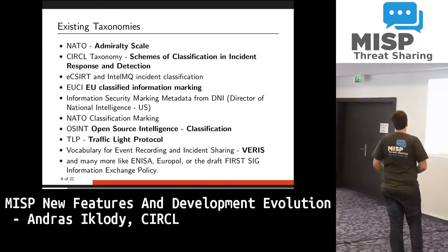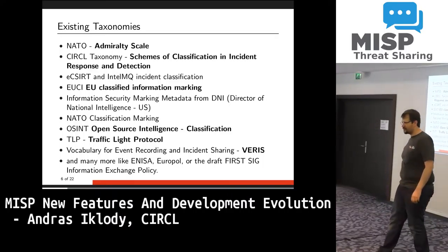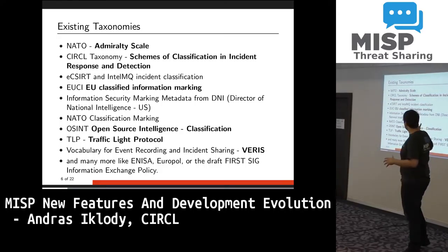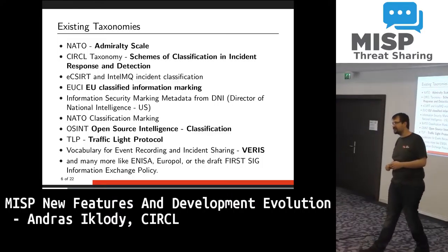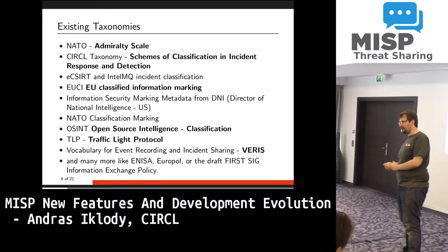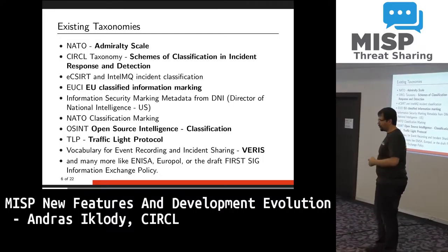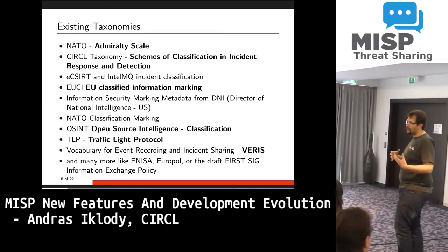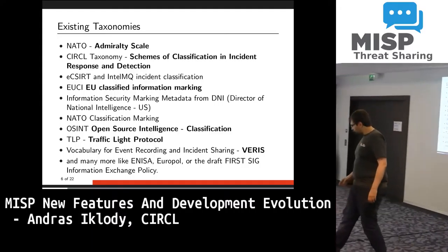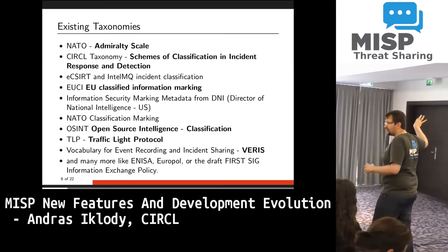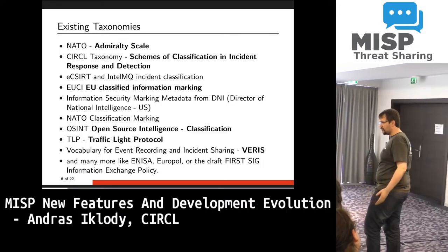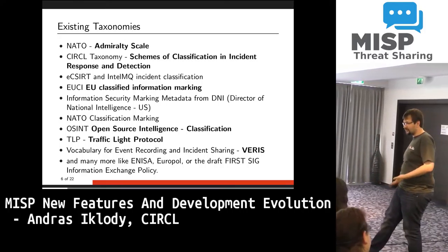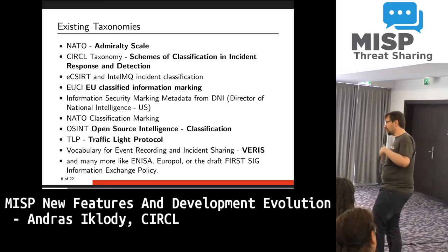Here's a list of some of the taxonomies we have — not nearly comprehensive, we have something like 40 taxonomies at the moment. They deal with very different issues: for example, the Admiralty Scale deals with reliability of data, and the CIRCL taxonomy deals with classifying data. If you have ideas for new taxonomies, feel free to open a pull request with your idea and contribute it. Even if you have ideas for enhancing an existing taxonomy, feel free to do that.